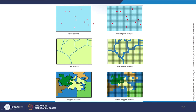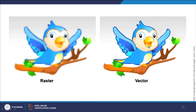For point data converted to raster, the point occupies a cell. For line features converted to raster, jagged or stair-step issues appear. For polygon-to-raster conversion, boundary problems and spatial resolution issues arise. Both raster and vector models have various advantages and disadvantages. A cartoon comparison is used here — in vector the image looks very smooth and clean, but in raster representation it is not as clean, even though it represents the same content.